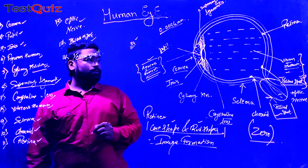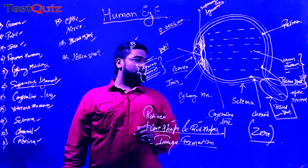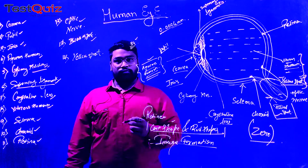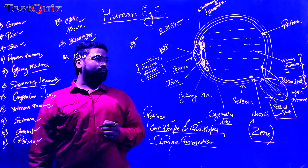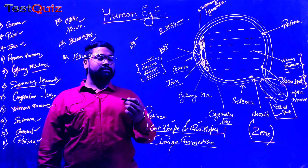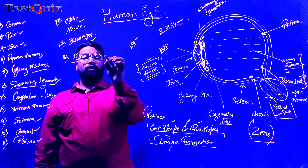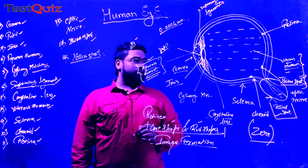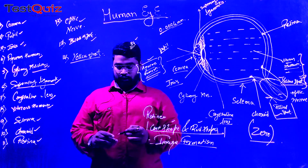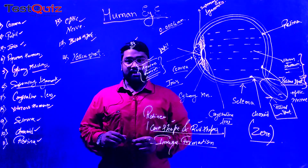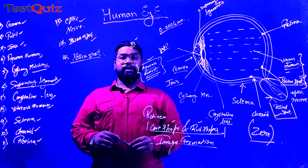We also have the blind spot, where we don't have any kind of cone-shaped cells and rod-shaped cells — their presence in the blind spot is completely zero. And finally, we have the yellow spot, where billions of cone-shaped cells and rod-shaped cells are present, which are completely responsible for the formation of image.